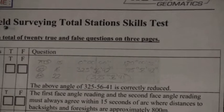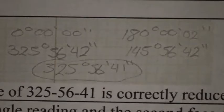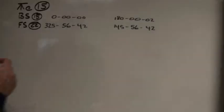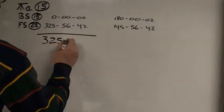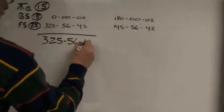Question number one. Is the angle reduced correctly? You subtract 0 from 325-56-42, and you get 325-56-42.